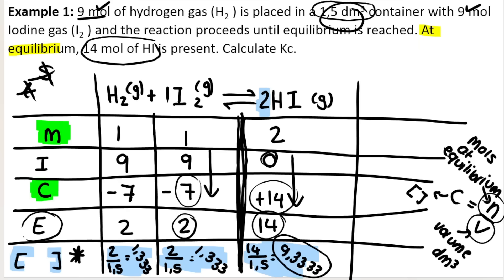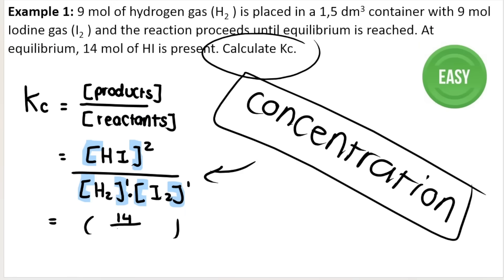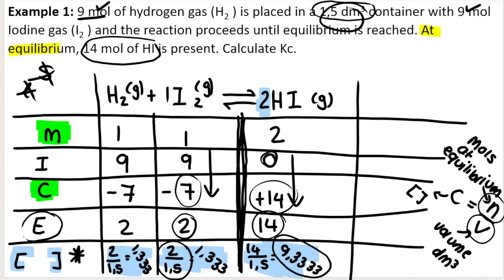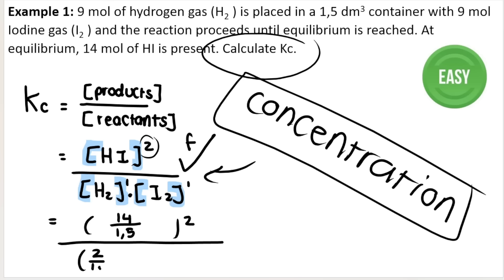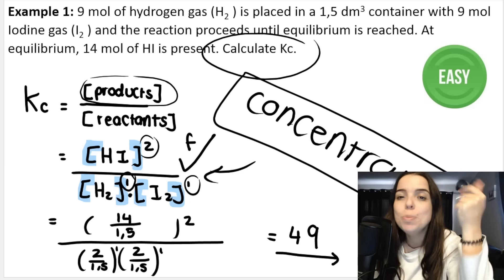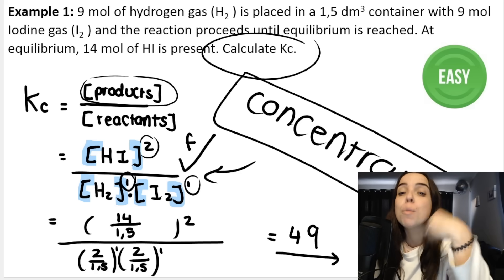The concentration of HI at equilibrium is 14/1.5 — I'll leave it as a fraction. Don't forget to square it, as that's what the formula says, and this will get you your formula mark. Then divide by the concentration of hydrogen at equilibrium, which is 2/1.5, multiplied by the concentration of iodine, also 2/1.5. When you type this into your calculator, you should get KC = 49, which is a very large KC value. It basically means that once equilibrium was reached, there's a lot more products present than reactants. In the videos to come, we'll go over more complicated examples.